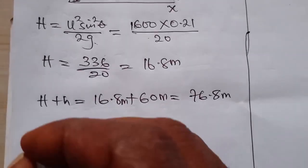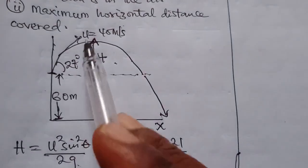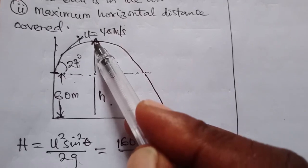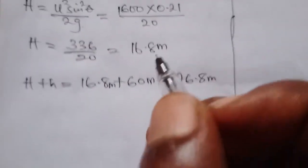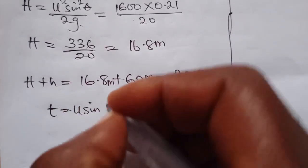So having gotten this, now what of the time it will take? Let's say this place is point A. We need to calculate the time it will take to get to this point, and the time to get to point A is given as t equals u sine theta over g.